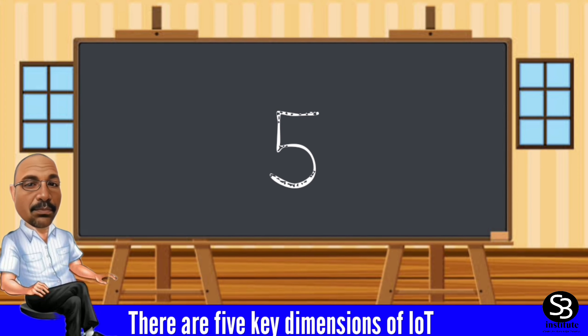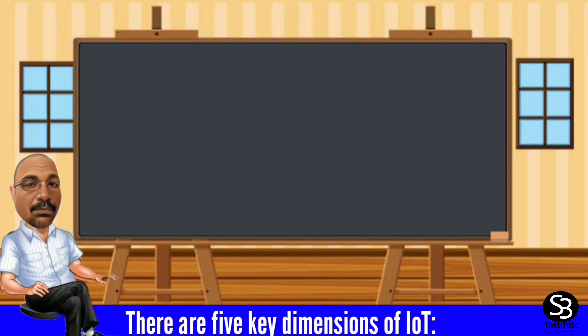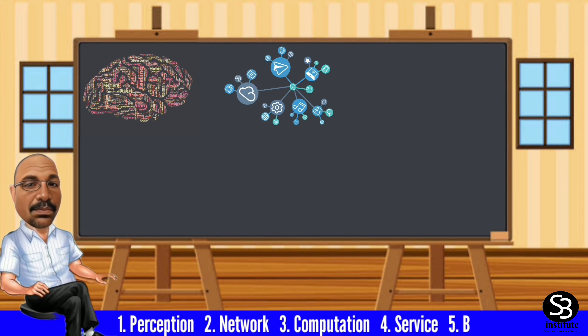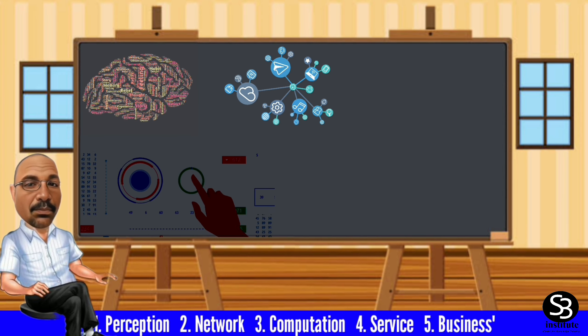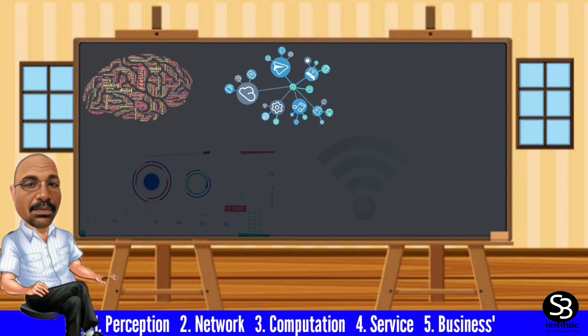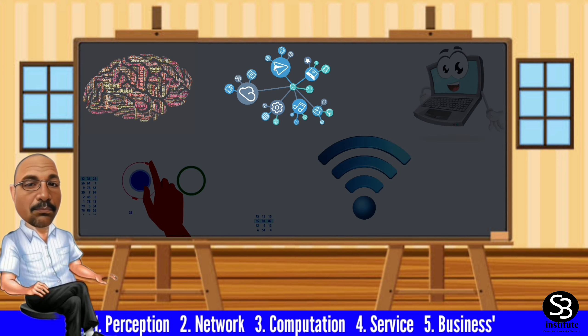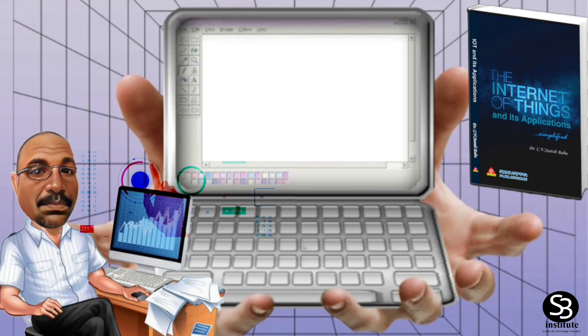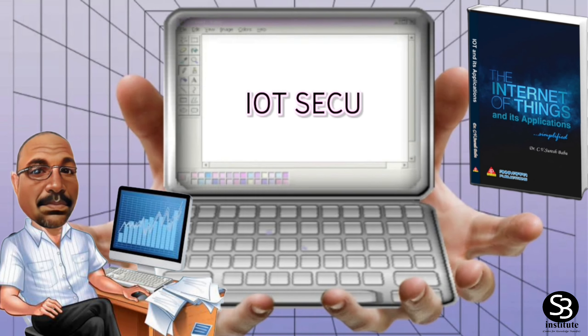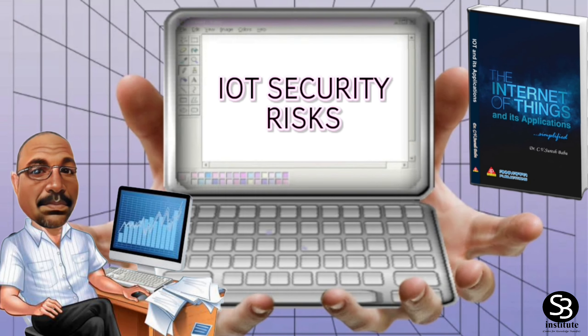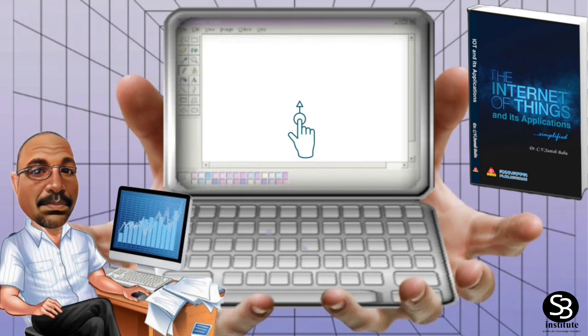There are five key dimensions of IoT security: Perception, Network, Computation, Service, and Businesses.